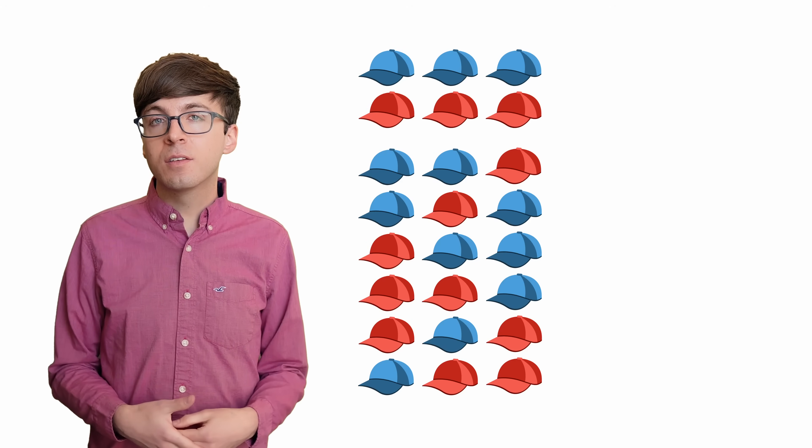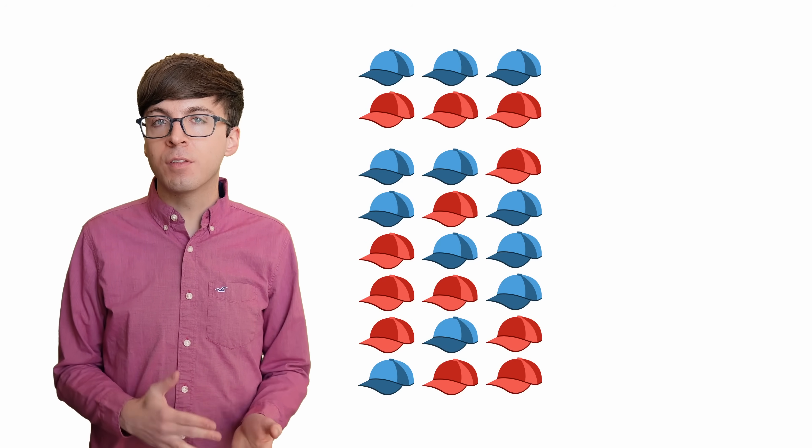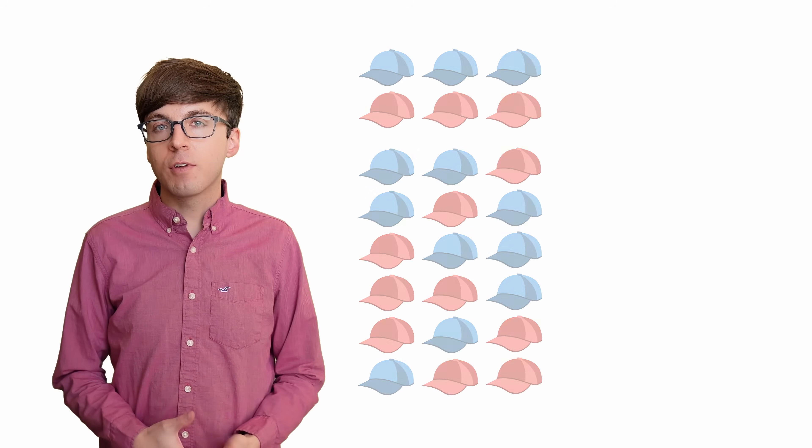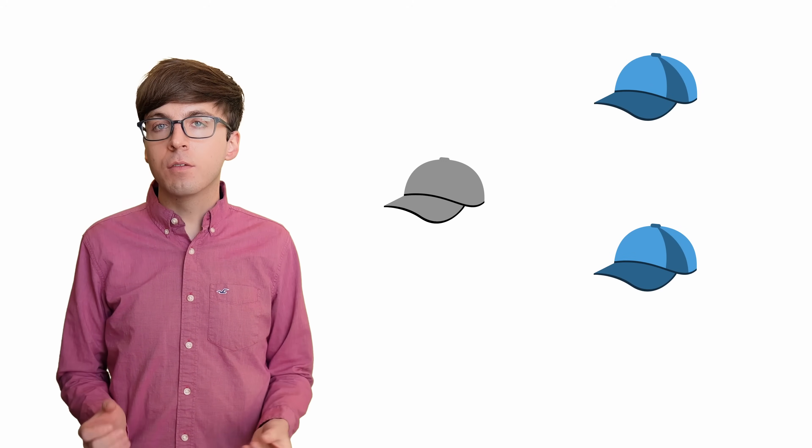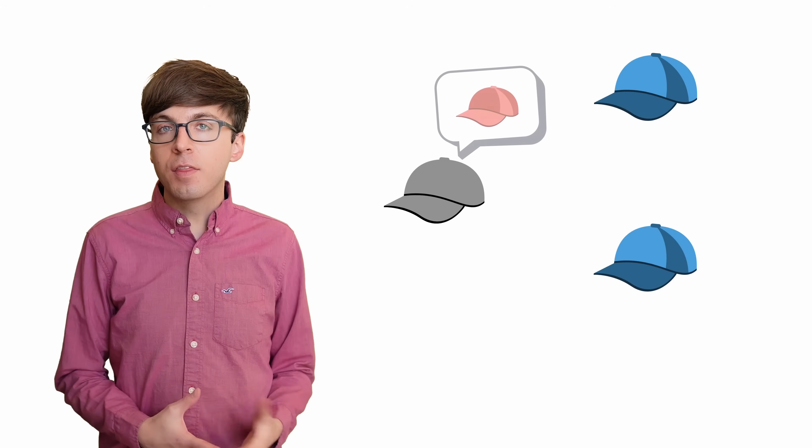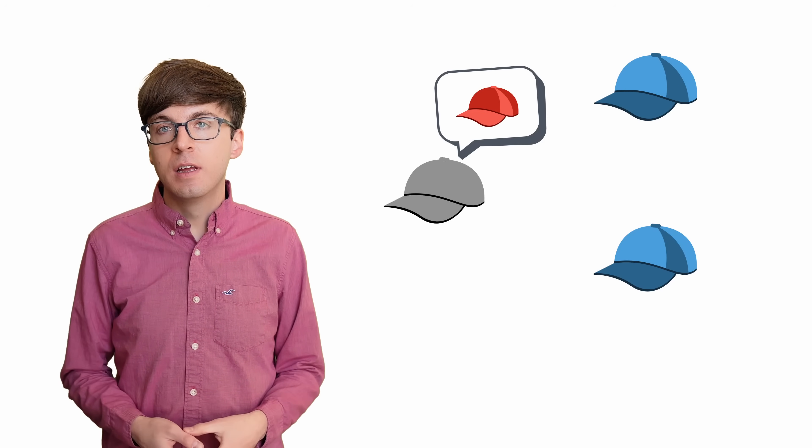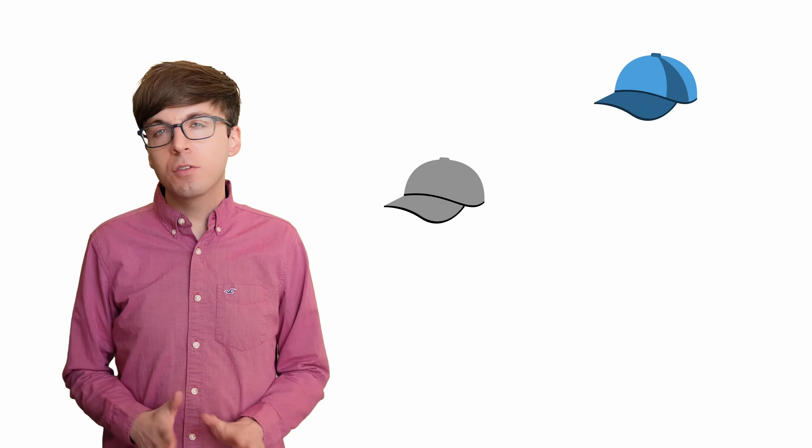Otherwise, there will be two hats of one color and one hat of the other. So let's try this strategy. If a prisoner sees two hats of the same color, then they guess that their hat is the other color. If a prisoner sees two different colors, they just won't guess.